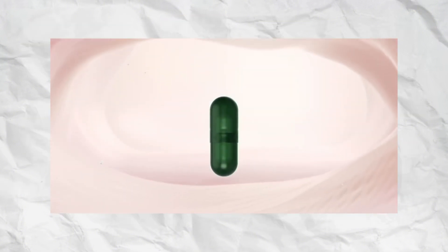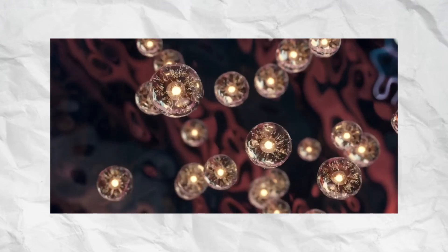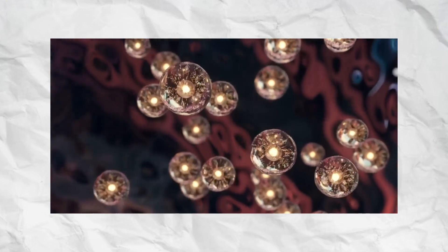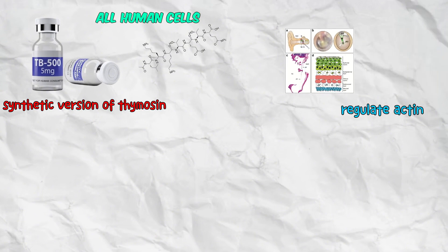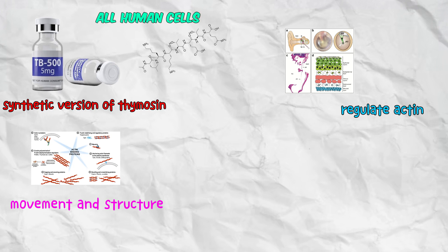TB-500 is a synthetic version of thymosin beta-4, a natural peptide found in nearly all human cells. Its main role is to regulate actin, a protein essential for cell movement and structure.